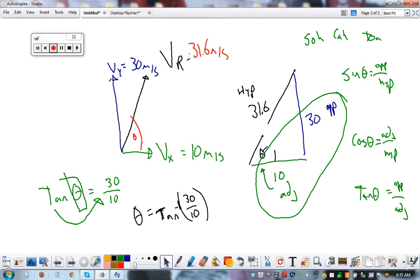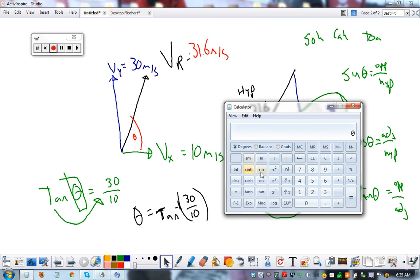To solve for this, take a look at my calculator. Yours probably won't look like this, but you just need to figure this out and ask for help in your group. So, I want this button right here, inverse tangent. So, I'm going to press 30 divided by 10 equals inverse tangent. And that's my answer, 71 degrees.